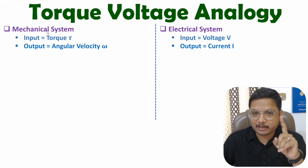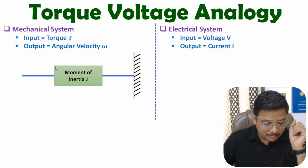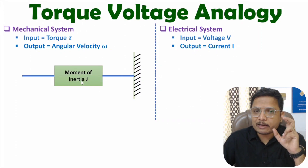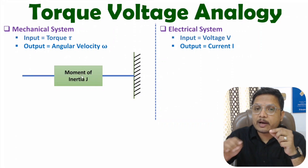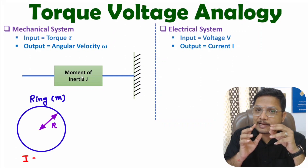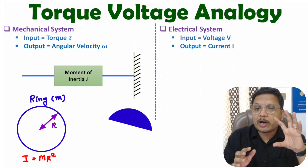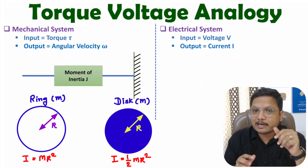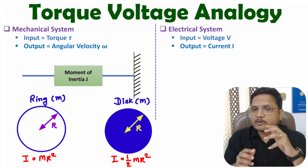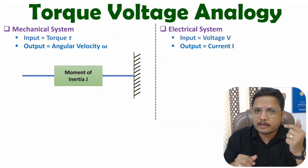The mechanical system here is a rotational mechanical system. First, I will consider one mechanical element having moment of inertia J. Moment of inertia depends on the shape of the body. If you have a ring with mass M and radius R, then moment of inertia is M times R squared. If you have a disk with radius R, then moment of inertia is half M R squared. So with different shaped bodies, moment of inertia is different.